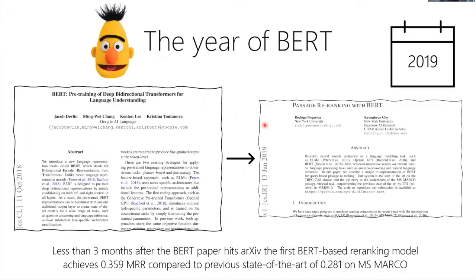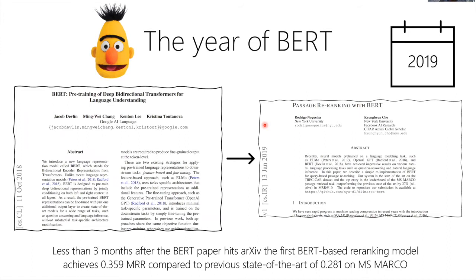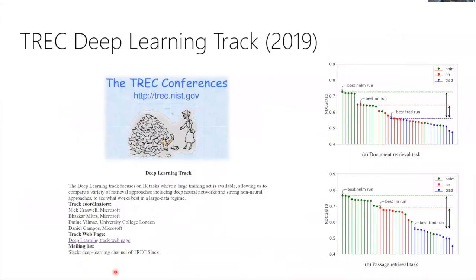The non-standardization of benchmarks and unavailability of a common benchmark created weak baseline and reproducibility issues — and neural baselines were even harder to reimplement and tune on new benchmarks. Coincidentally, around mid-to-late 2018 we built the MS MARCO passage ranking leaderboard. And we immediately saw the benefit: in October 2018 the BERT paper hit arXiv, and three months later in January 2019, Nogueira and Cho had the first BERT-based passage ranking submission on the leaderboard. We immediately saw almost an 8-point jump in MRR — a huge improvement.